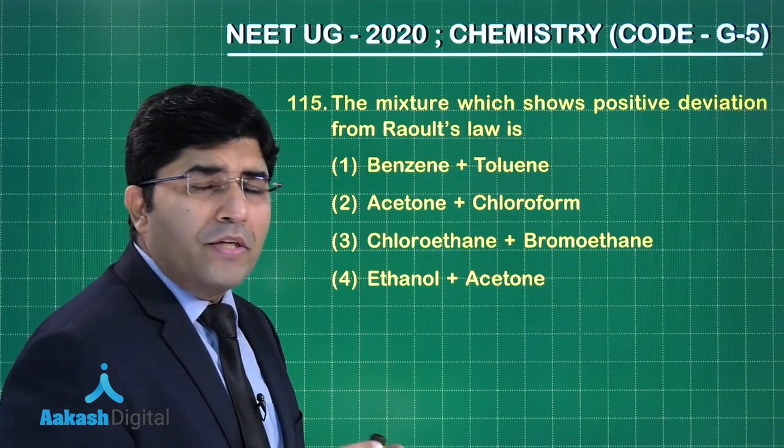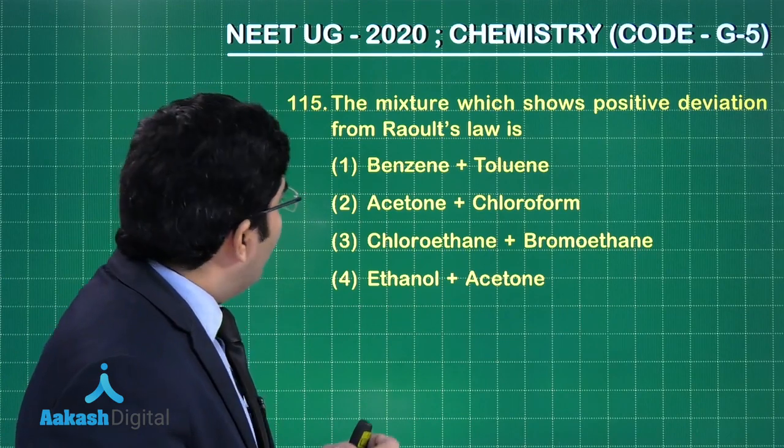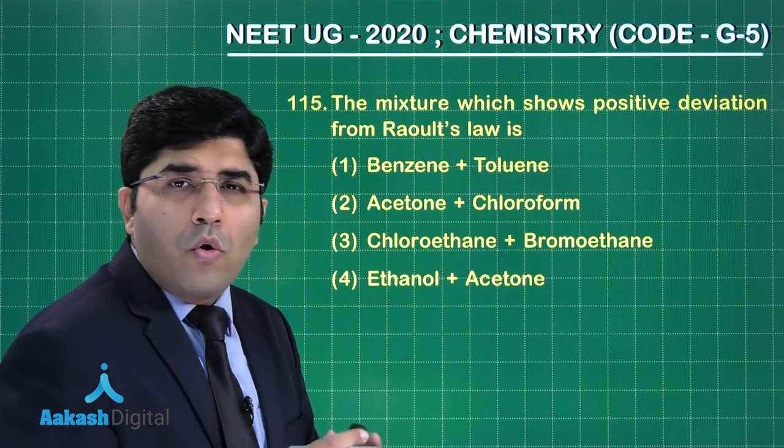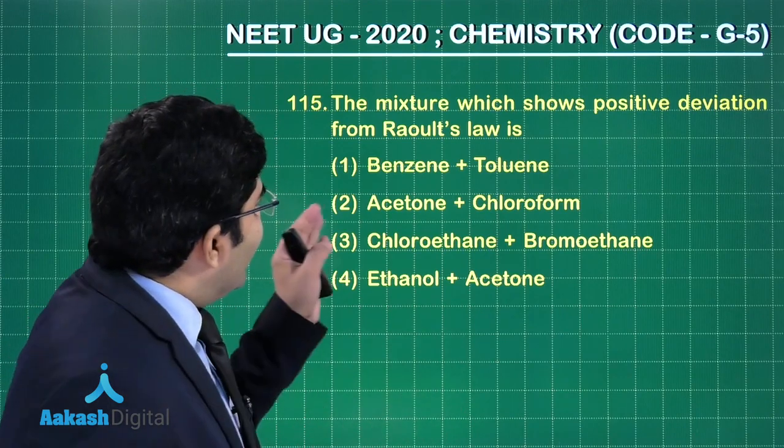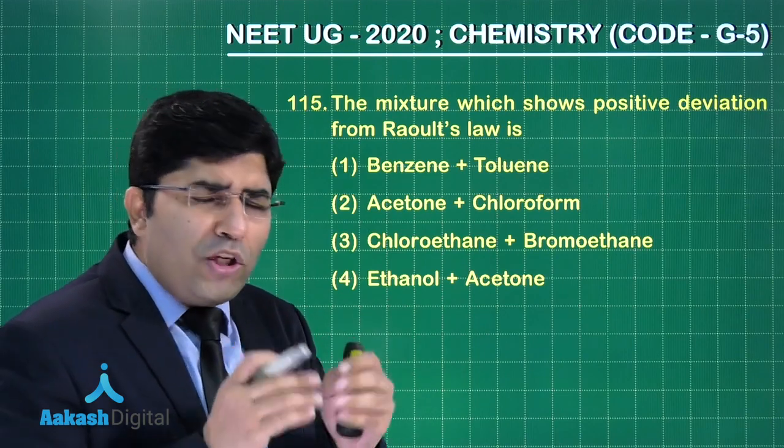So now this is a question from the chapter solutions and he's asking the mixture shows the positive deviation from Raoult's law. First one is benzene plus toluene. Now benzene plus toluene will show or I should say that it will make ideal solution as per the NCERT.